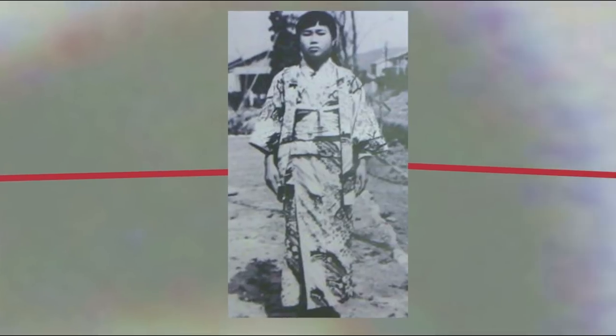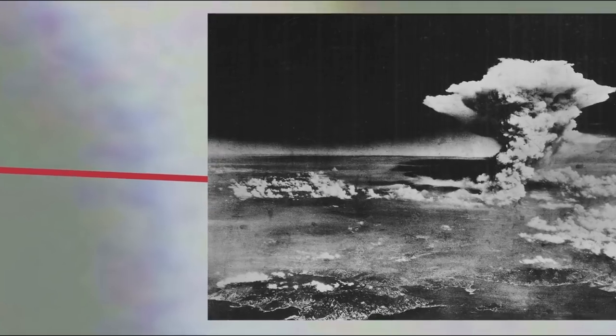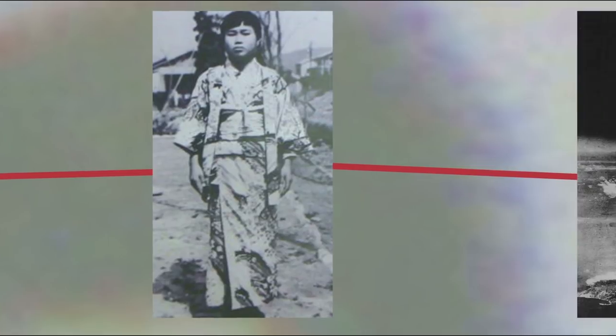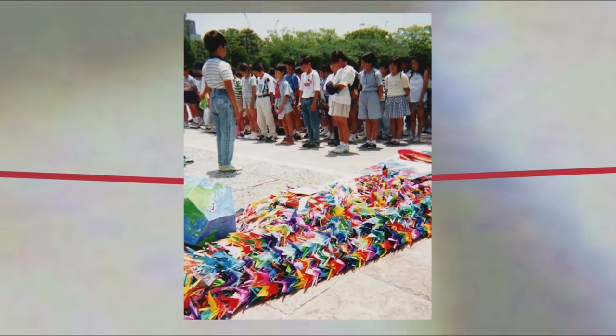There is the famous story of Sadako Sasaki, who was exposed to radiation at the bombing of Hiroshima when she was two years old. Later she developed leukemia and set about making a thousand cranes, but seeing other children around her in the hospital dying and realizing that she too would die, she changed her wish from preserving her life to instead wishing for world peace and an end to suffering.